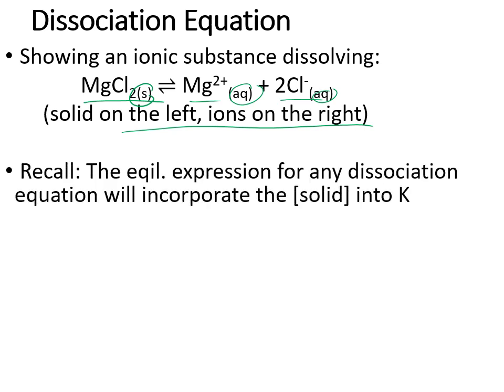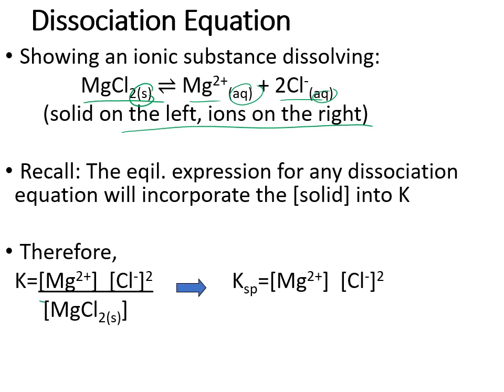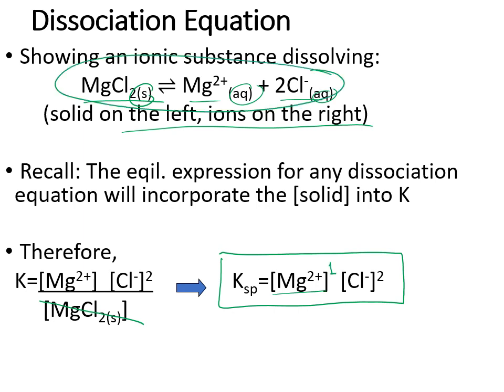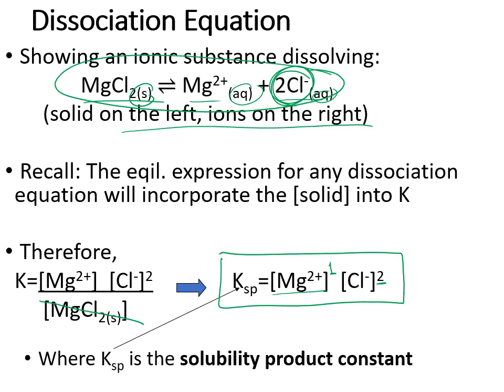Recall that the equilibrium expression for any dissociation incorporates the solid concentration, which does not change, into the constant K value. So we would not write the solid in the denominator — as a reactant on the left, it would end up on the denominator. Our Ksp expression for the dissociation of any ionic substance is just the concentration of the ions raised to their coefficients in the balanced dissociation equation. If two chloride ions are formed, we put an exponent of two on the chloride ion. Instead of just calling it K, we specify it as the solubility product constant and write K with a subscript sp.